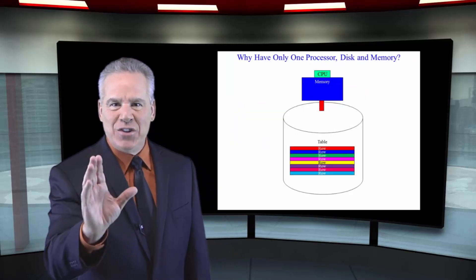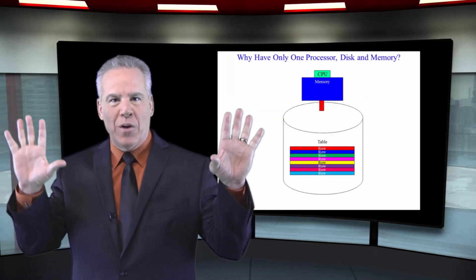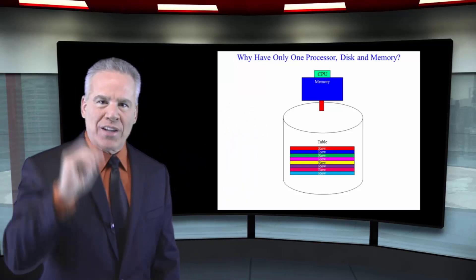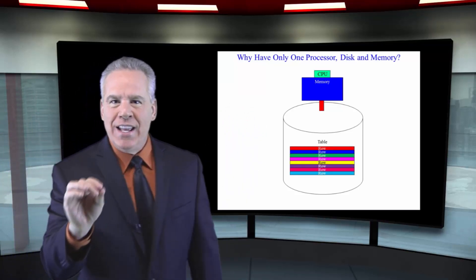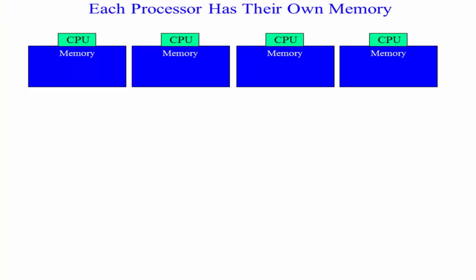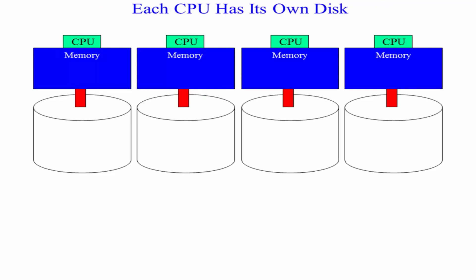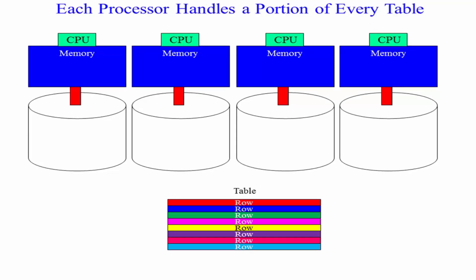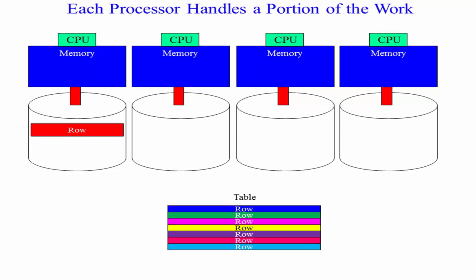You see, the key to great massive parallel processing isn't to have a processor with a disk and move it into memory. It's to have many processors. They have their own memory. They each have their own disk.